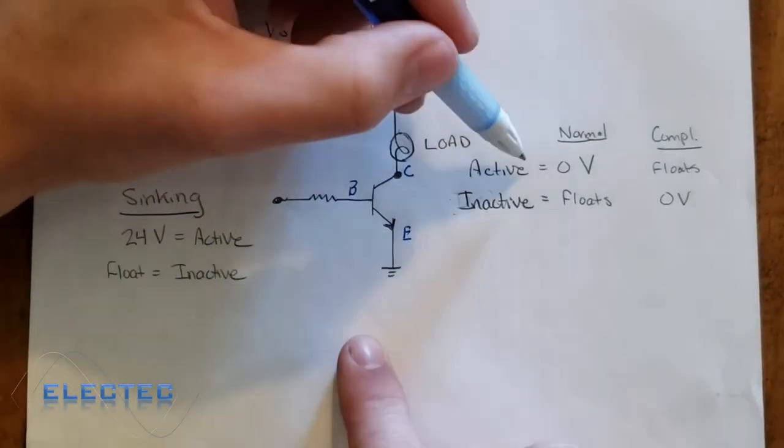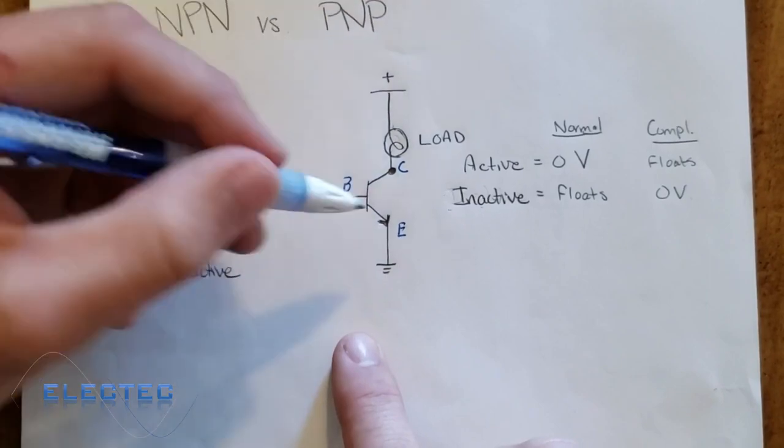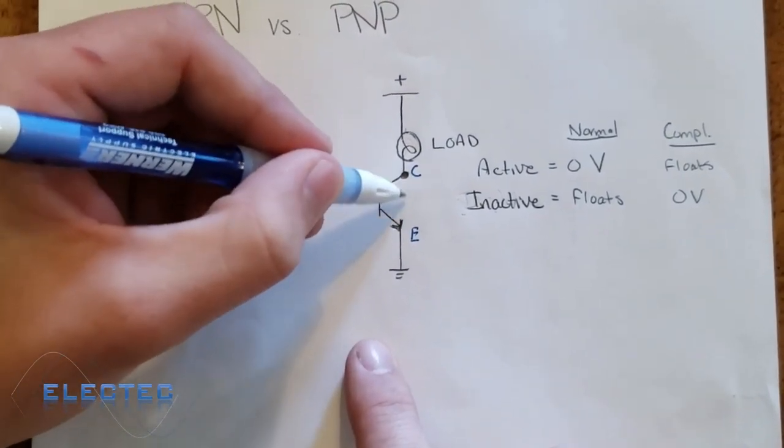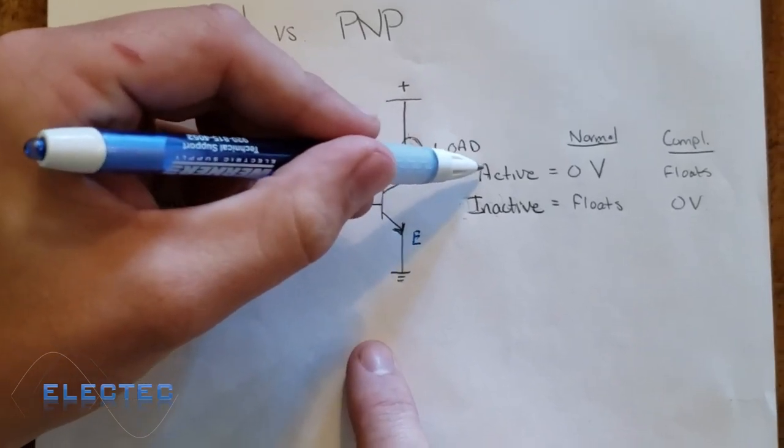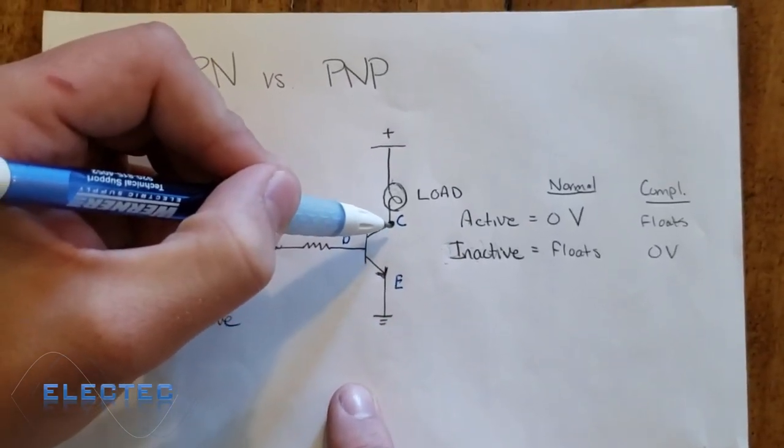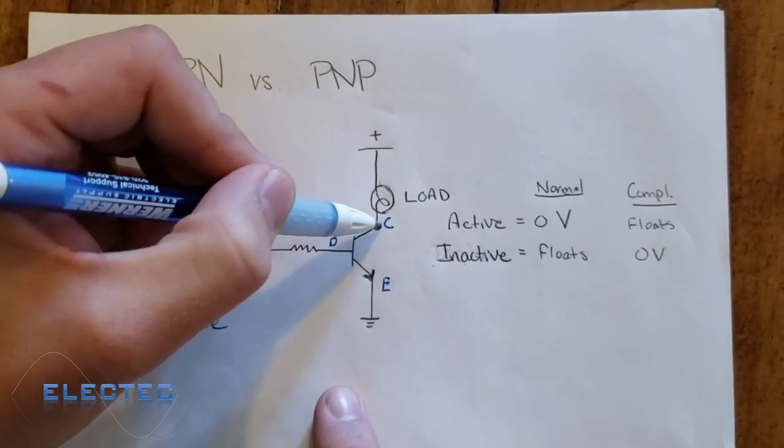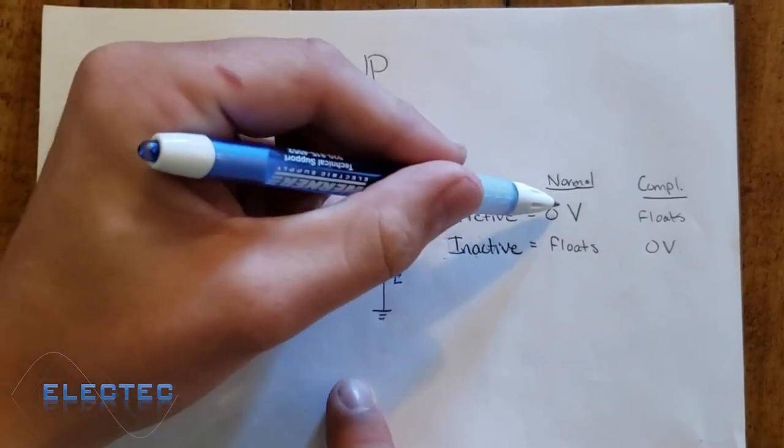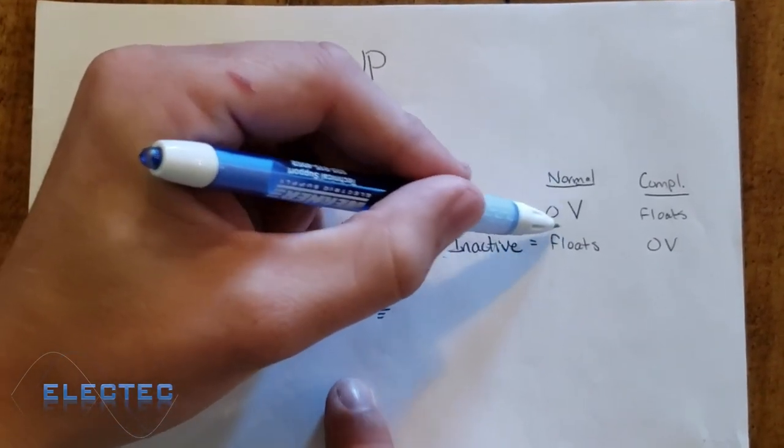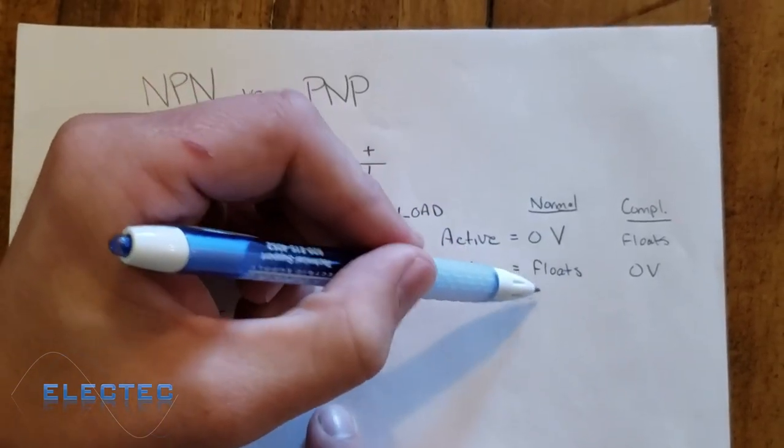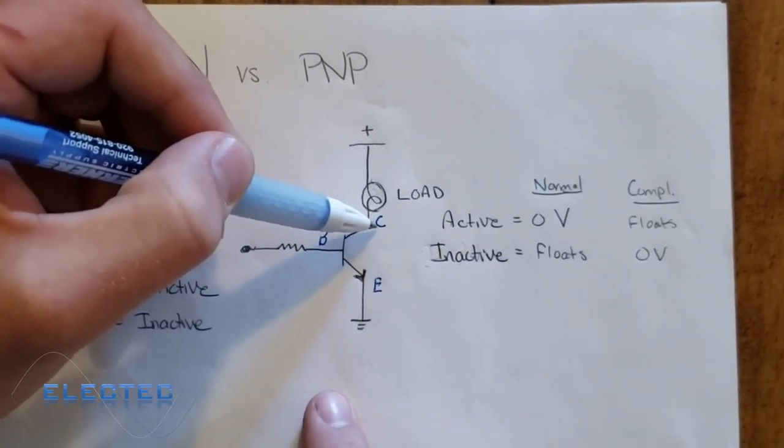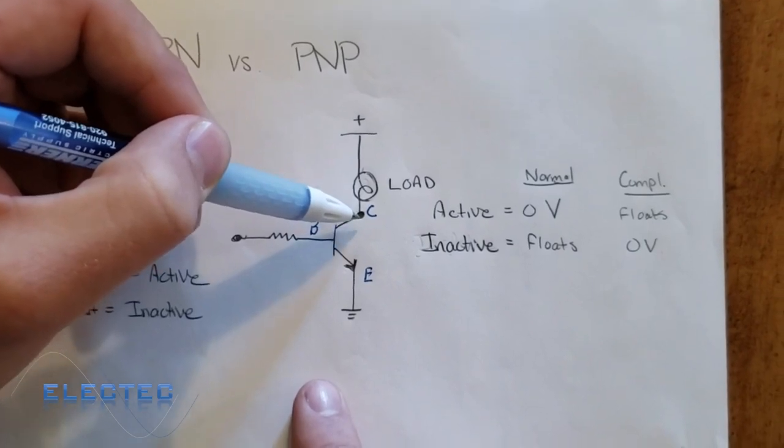It activates the transistor. When the transistor becomes active, because it connects these two points internal to the transistor, what it does is it supplies zero volts on our collector. So our collector, now the active state of the transistor, is zero volts.